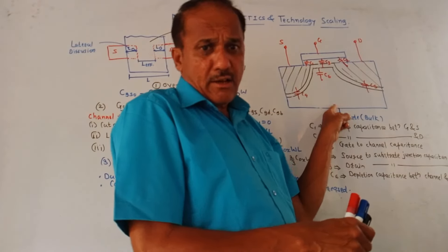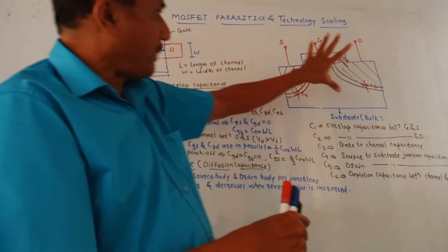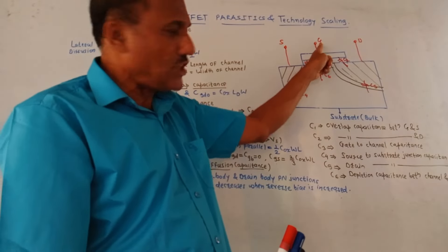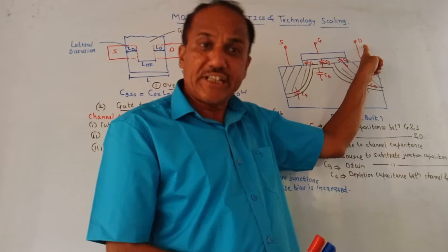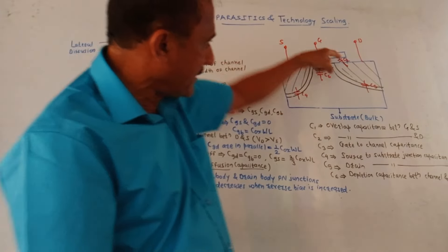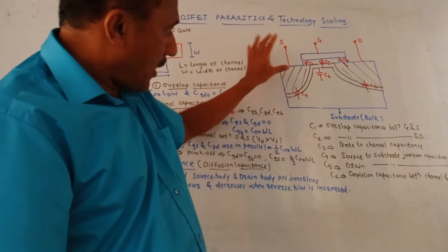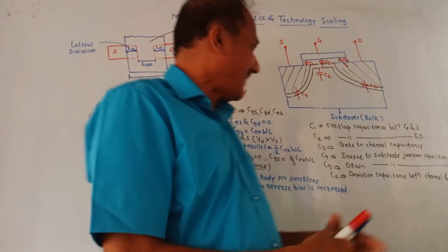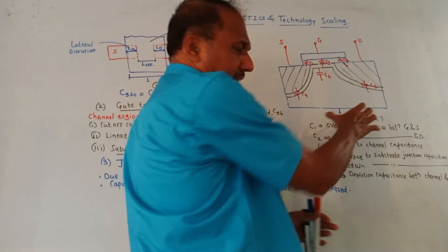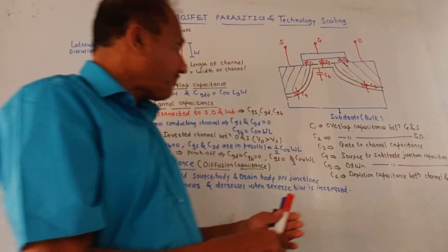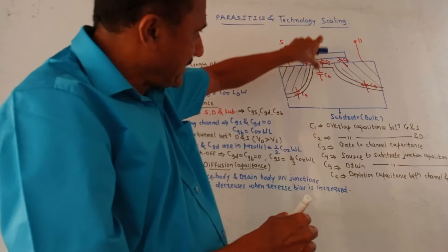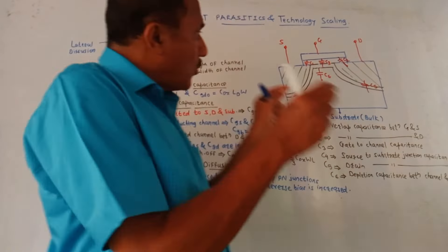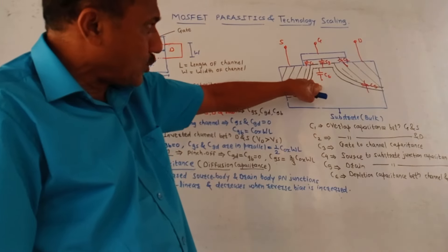This is the parasitic capacitance model for a MOSFET. We know that in case of a MOSFET there are three major terminals: S (source terminal), G (gate terminal), and D (drain terminal). This portion is the source terminal part, this is the drain terminal part, and this particular portion represents the channel — the channel is created between source and drain. The lower portion indicates the substrate, which is also called the bulk. Six capacitors are shown in this diagram.